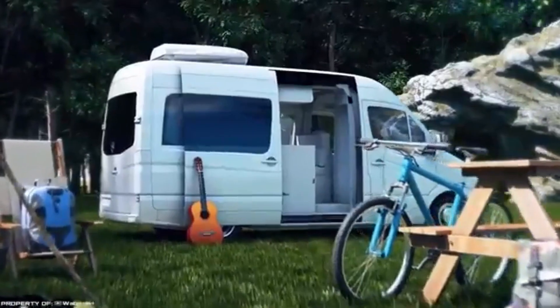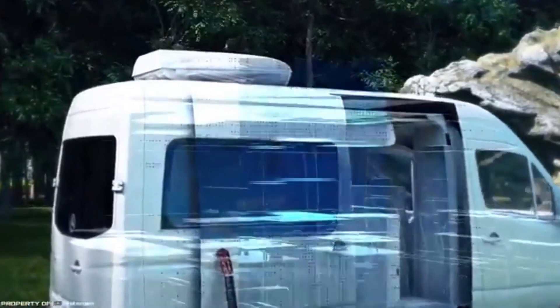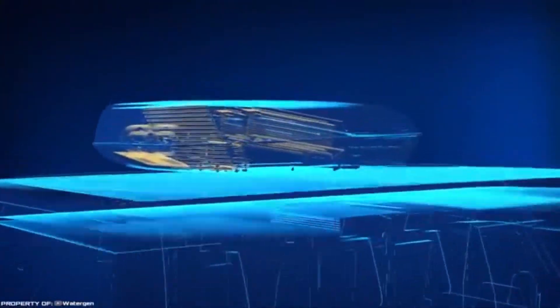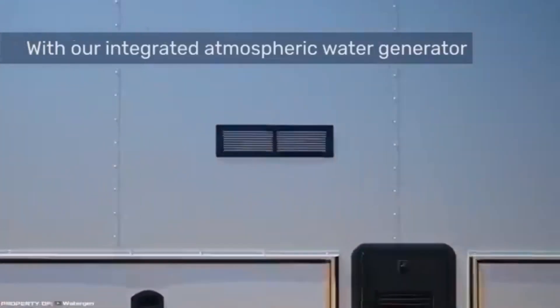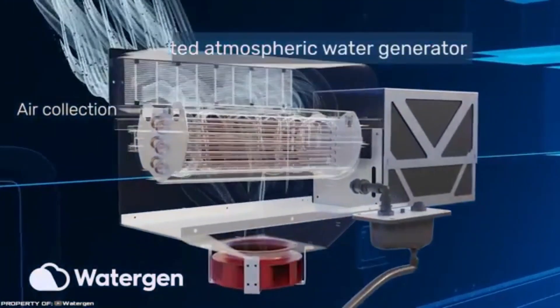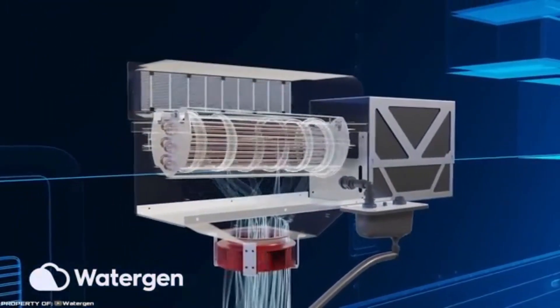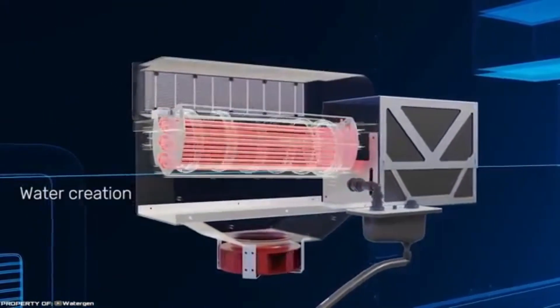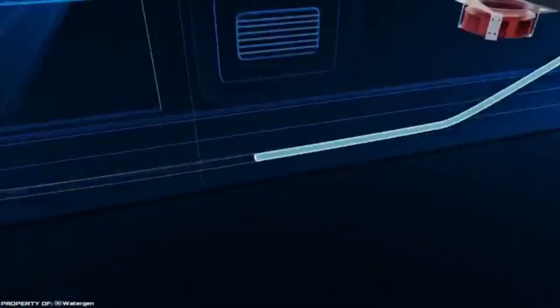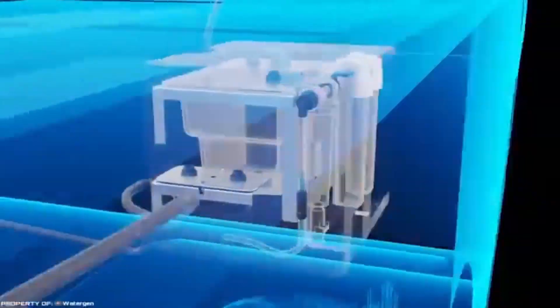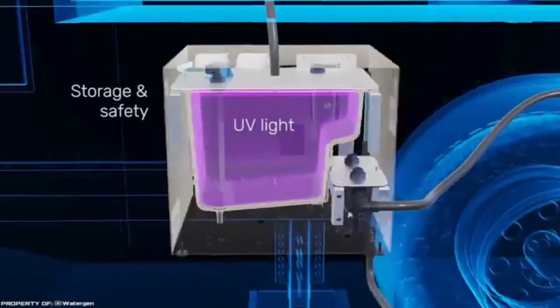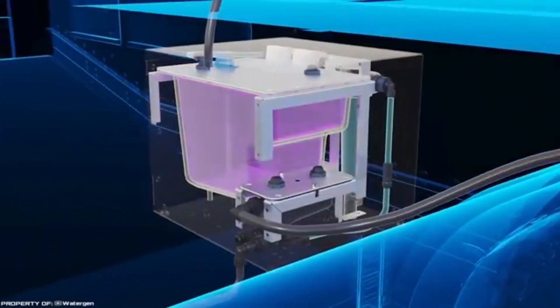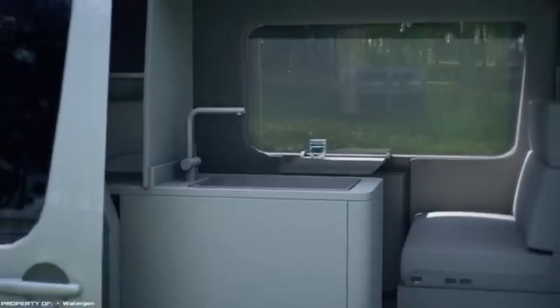Instead of generating electricity, the device extracts water from atmospheric air. Using a fan, the unit sucks in air from the environment and pumps it through a patented heat exchanger system which extracts liquid in the form of condensate. The collected water passes through a multi-level filtration system and is collected in a special tank. The productivity of such an installation is up to five gallons of liquid per day.